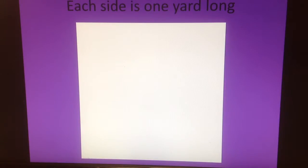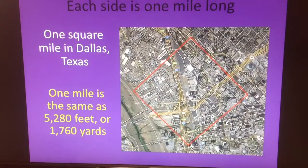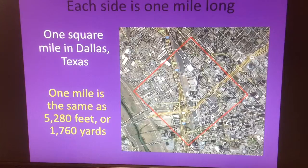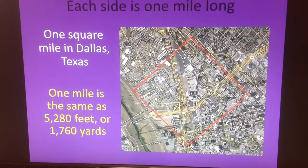Students wanted to know if I had a picture that was a mile on each side, but that's way too big to show on the projector. Here's a picture of Dallas, Texas — the red box shows what one square mile looks like. Each side of that square is one mile long, and you can see highways connecting so you can imagine how big a mile is. A mile is the same as 5,280 feet or 1,760 yards.